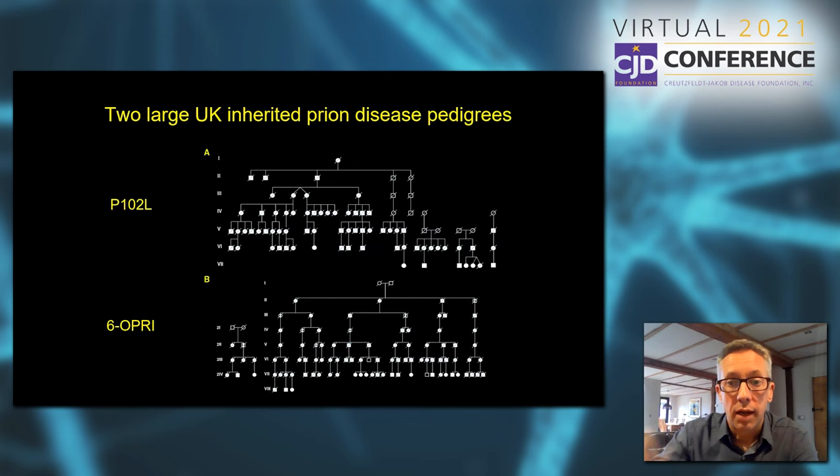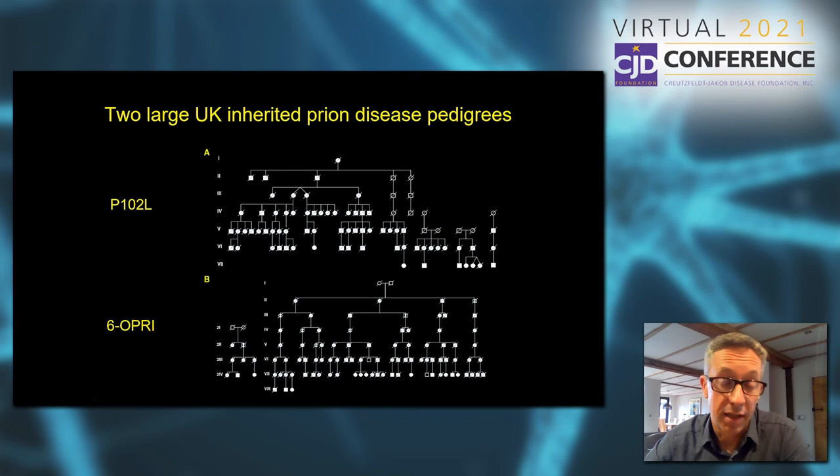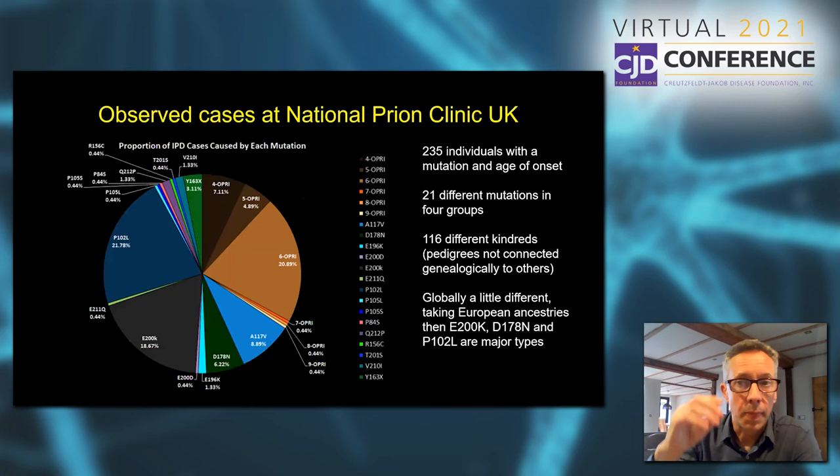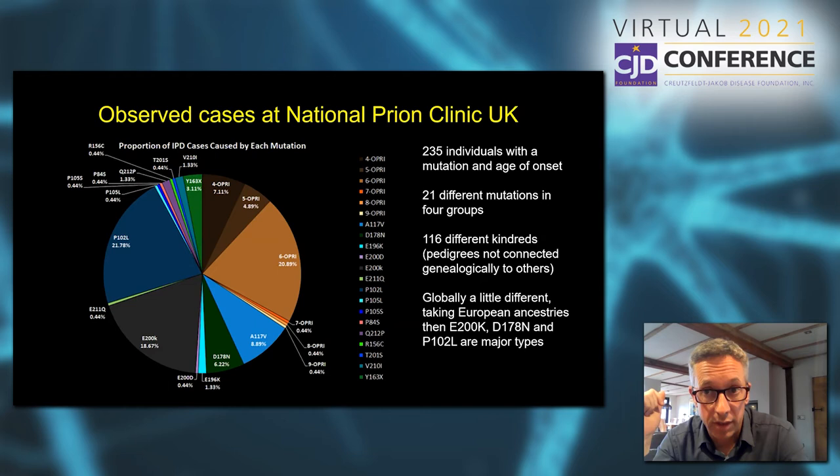Some of the pedigrees that I help look after in the UK are very, very large. There may be several hundred individuals at risk of inheriting a mutation in these pedigrees, illustrated here connected by people that died from the disease. In the UK over the last 30 years, we've diagnosed 235 individuals with a prion protein gene mutation and inherited prion disease and know the age at which the disease started.